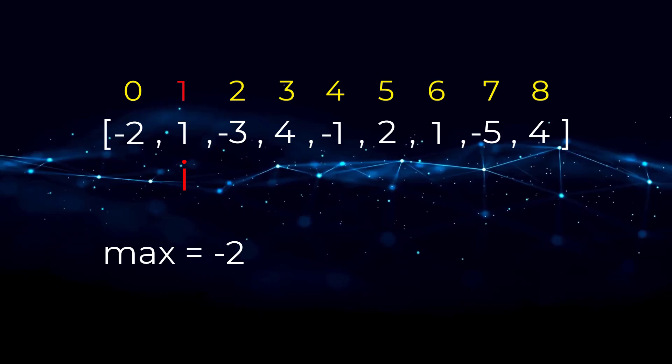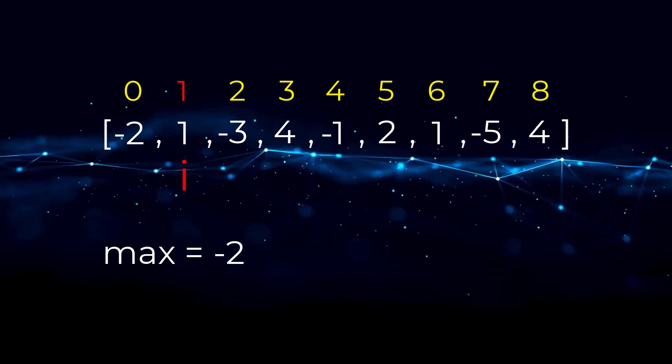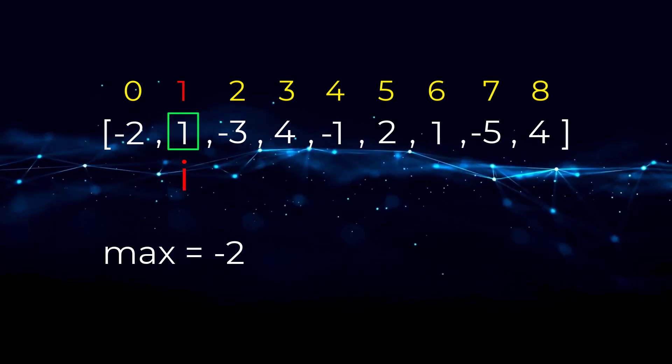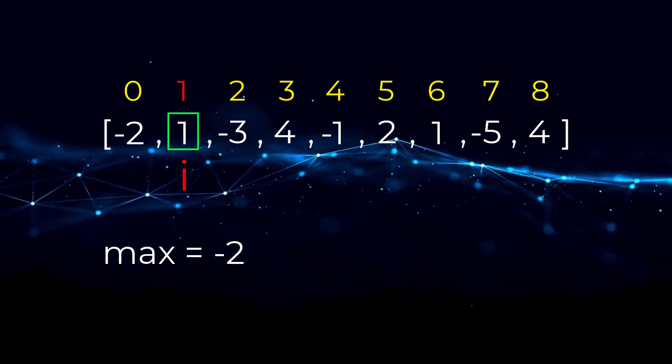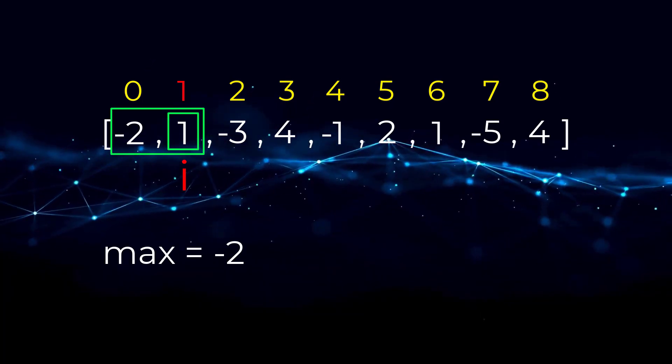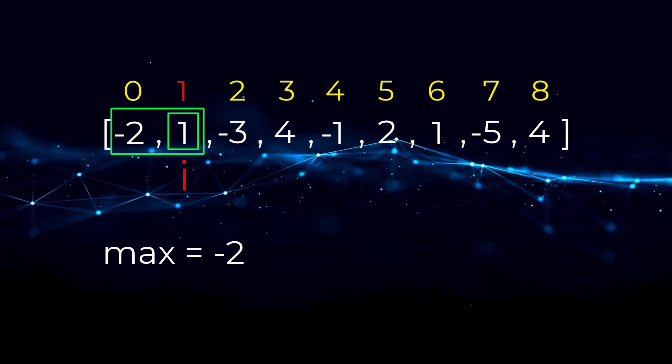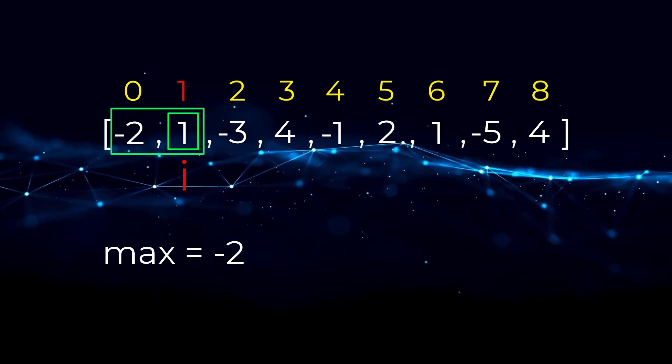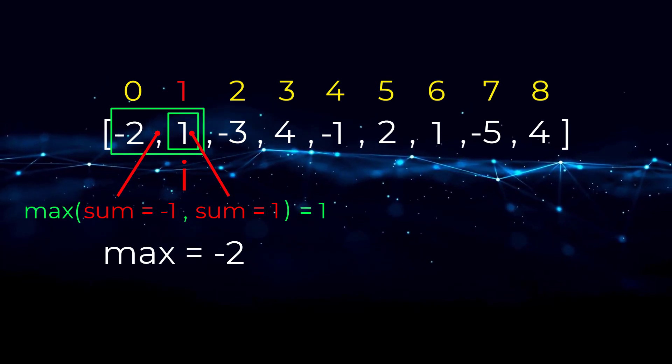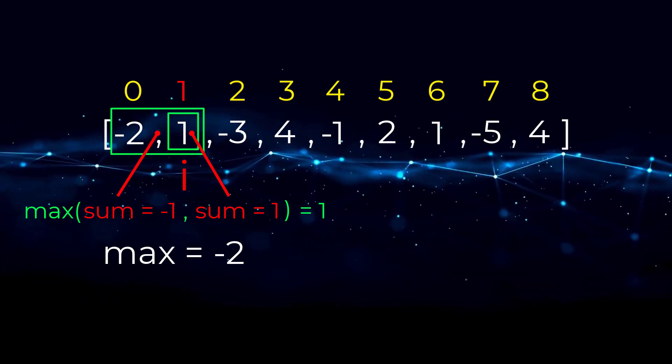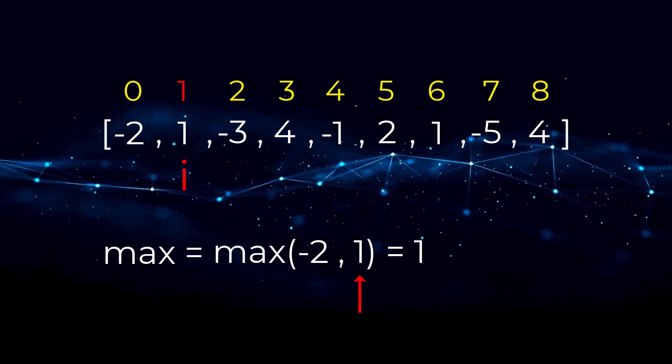Here's the critical part of the algorithm. Right now, our eye pointer is looking at value one. We have two options here. The current position in our array stays exactly the same, one in this case. The other option is our current position becomes the current value plus the previous value, or in other words, negative two plus one, which equals negative one. All we are doing here is comparing this subarray and this subarray, but one is obviously greater, which means we leave our current position the same.